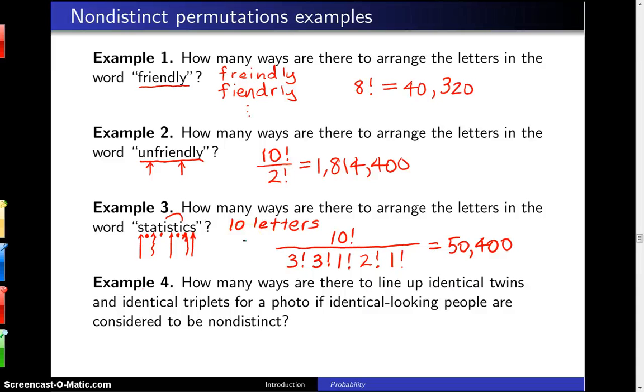So the example is how many ways are there to line up identical twins and identical triplets for a photo if identical looking people are considered to be nondistinct?